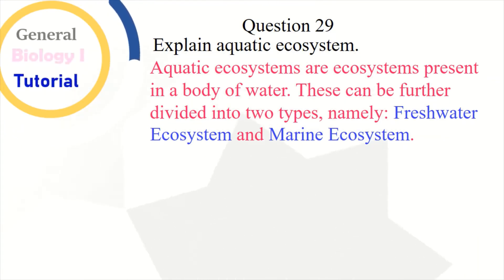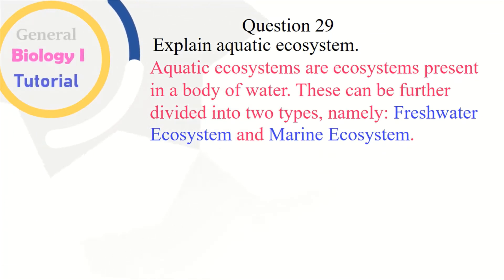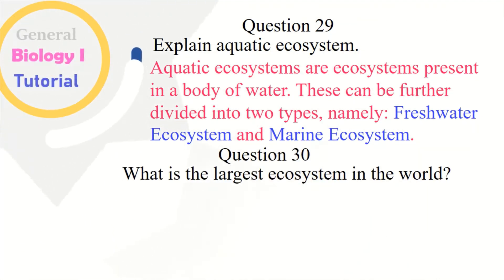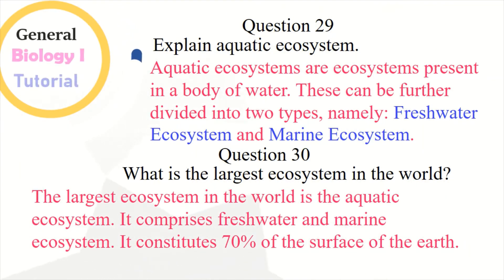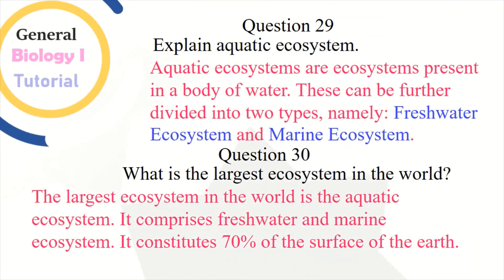Question 29: Explain aquatic ecosystems. Aquatic ecosystems are ecosystems present in a body of water. These can be further divided into two types: freshwater ecosystem and marine ecosystem. Question 30: What is the largest ecosystem in the world? The largest ecosystem in the world is the aquatic ecosystem. It comprises freshwater and marine ecosystems and constitutes 70% of the surface of the earth.